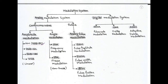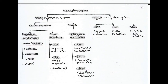The next type of continuous wave modulation is angle modulation, which is a nonlinear process. It includes frequency modulation (FM) and phase modulation (PM). In the case of analog pulse modulation, we have pulse amplitude modulation (PAM), pulse width modulation (PWM), and pulse position modulation (PPM).